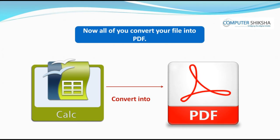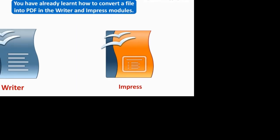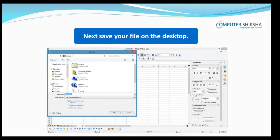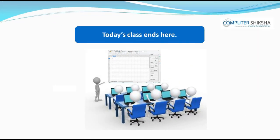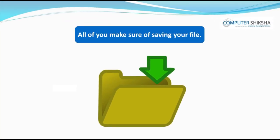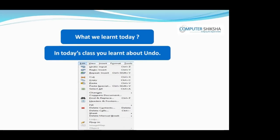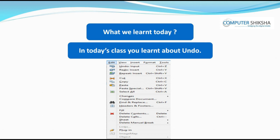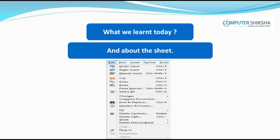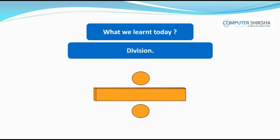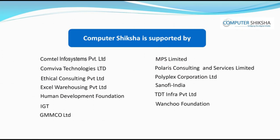Now convert your file to PDF — you have already learned how to do this in the Writer and Impress modules. Next, save your file on the desktop. Today's class ends here. Make sure to save your file, close it, and properly shut down your computer. In today's class you learned about undo, redo, copy, paste, find and replace, delete contents, delete cells, and the sheet option. You also learned formulas for sum, subtract, multiply, and division.